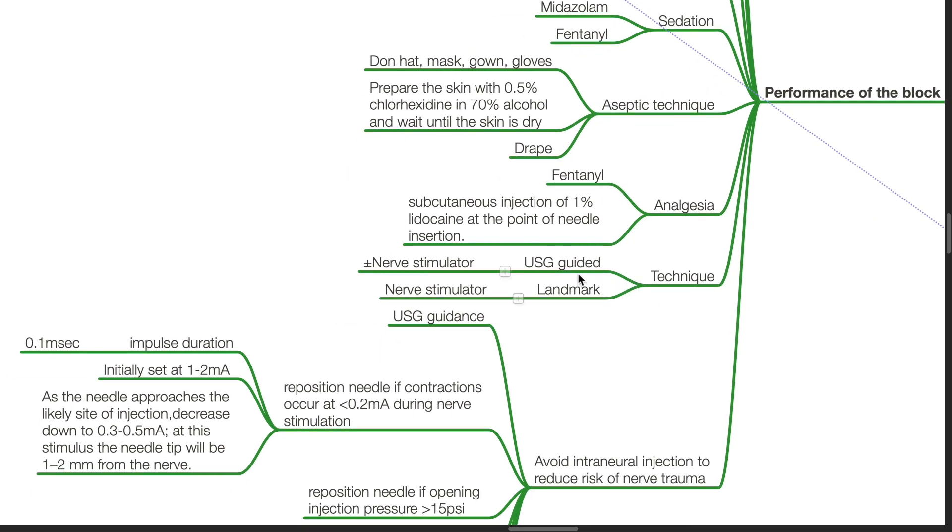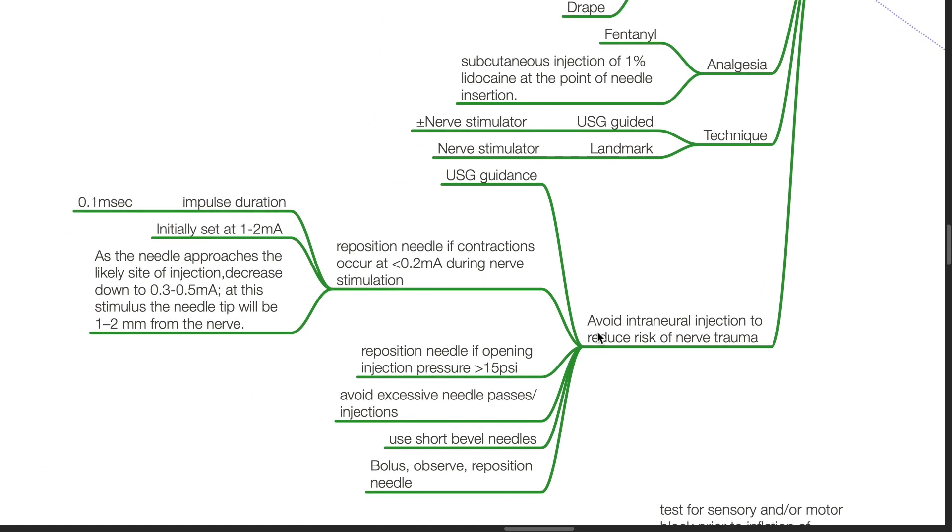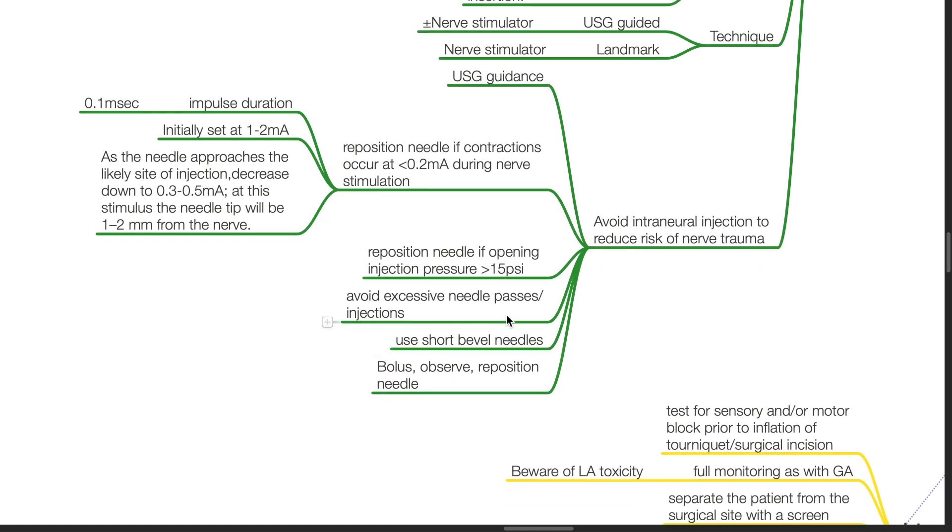Techniques include ultrasound-guided technique with or without nerve stimulator and landmark technique with nerve stimulator. Avoid intraneural injection to reduce risk of nerve trauma. Using ultrasound guidance, reposition the needle if contractions occur at less than 0.2 milliamps during nerve stimulation. Impulse duration should be 0.1 milliseconds, set at 1 to 2 milliamps initially. As the needle approaches the likely site of injection, decrease down to 0.3 to 0.5 milliamps. At this stimulus, the needle tip will be 1 to 2 millimeters from the nerve. Reposition the needle if opening injection pressure is more than 15 psi. Avoid excessive needle passes or injections. Use short bevel needles, bolus, observe, and reposition needle.